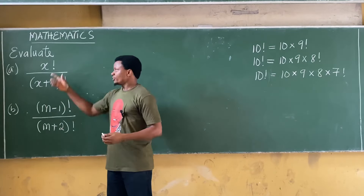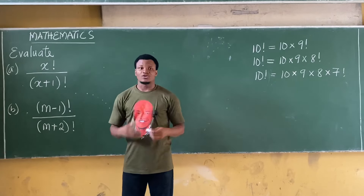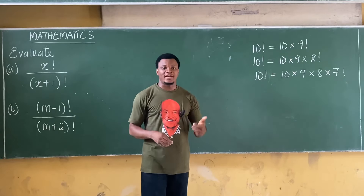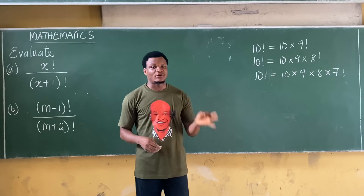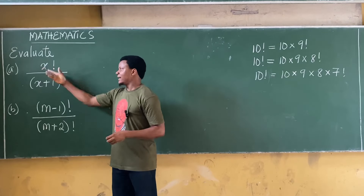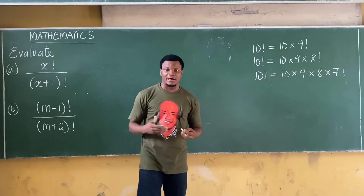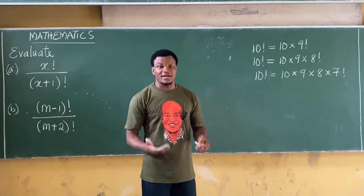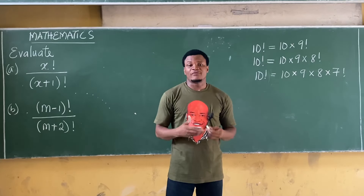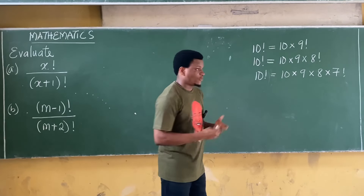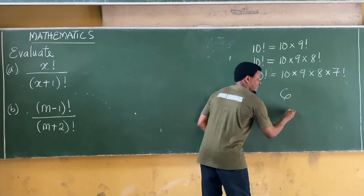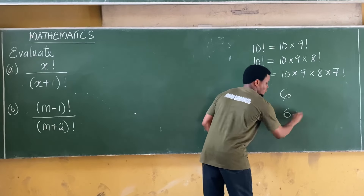Now, to solve this, your first task is to identify which factorial is the greater number. If I have x! and (x+1)!, which of them is greater? The answer is simple — if I have 6 and 6+1, that gives 7.